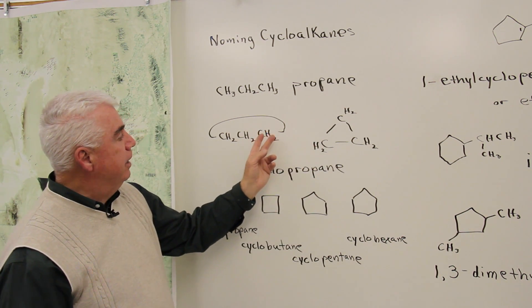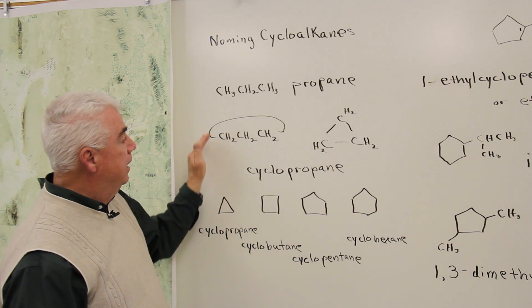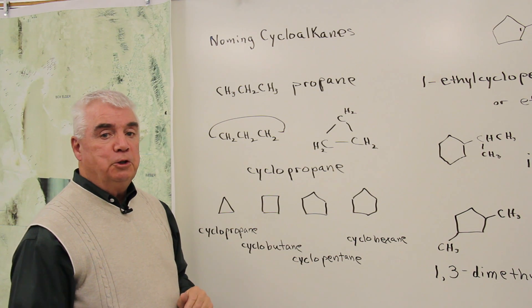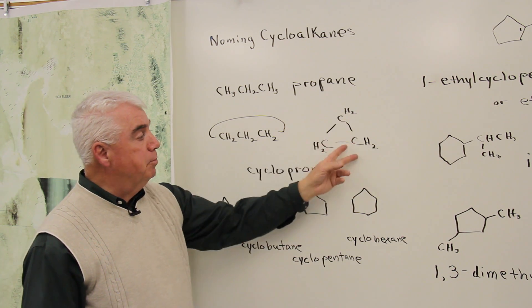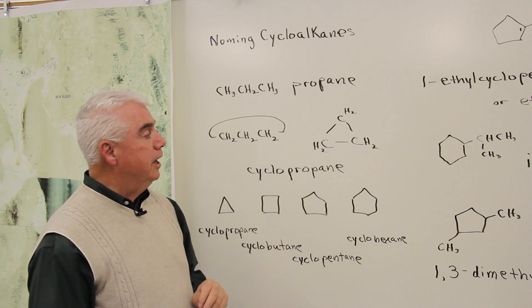What if we took a hydrogen off the end of propane and a hydrogen off this end and bonded those two positions together to get something like this? In other words, to form a ring or a cyclic structure.